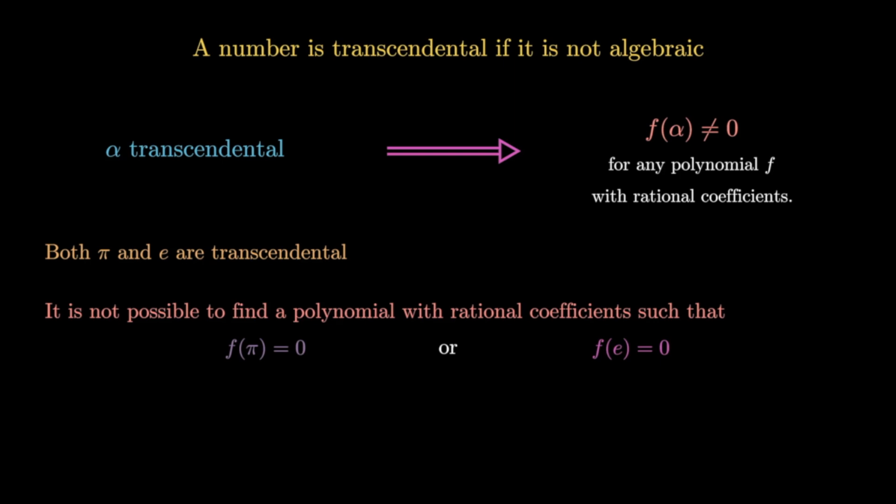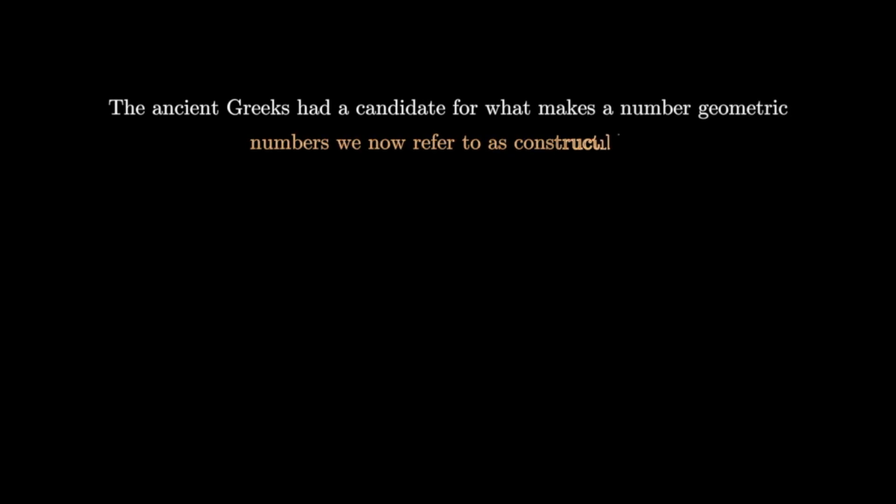Given that both π and Euler's number are transcendental, and π has such an elementary geometric description, we want to know whether Euler's number admits a geometric description in a similar manner. The ancient Greeks had a candidate for what makes a number geometric: numbers we now refer to as constructibles. Unfortunately, π is not a constructible number, so constructibles are not really the geometric interpretation we're looking for. We're asking whether e is geometric in the sense that π is geometric, so we may need to ask a more general question.